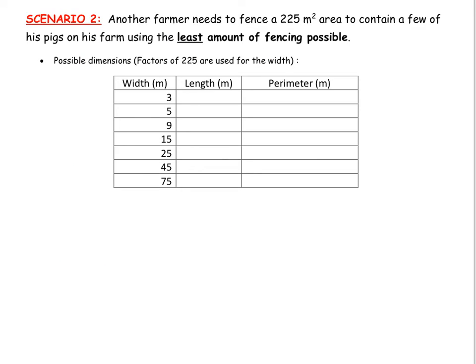Now another scenario. Similar idea but sort of what I'm going to call the opposite scenario. We have another farmer and he needs to fence a given area, an area of 225 meters squared, to contain a few of his pigs on his farm. But he wants to use the least amount of fencing possible. And again this is called optimization because I'm actually trying to minimize perimeter.